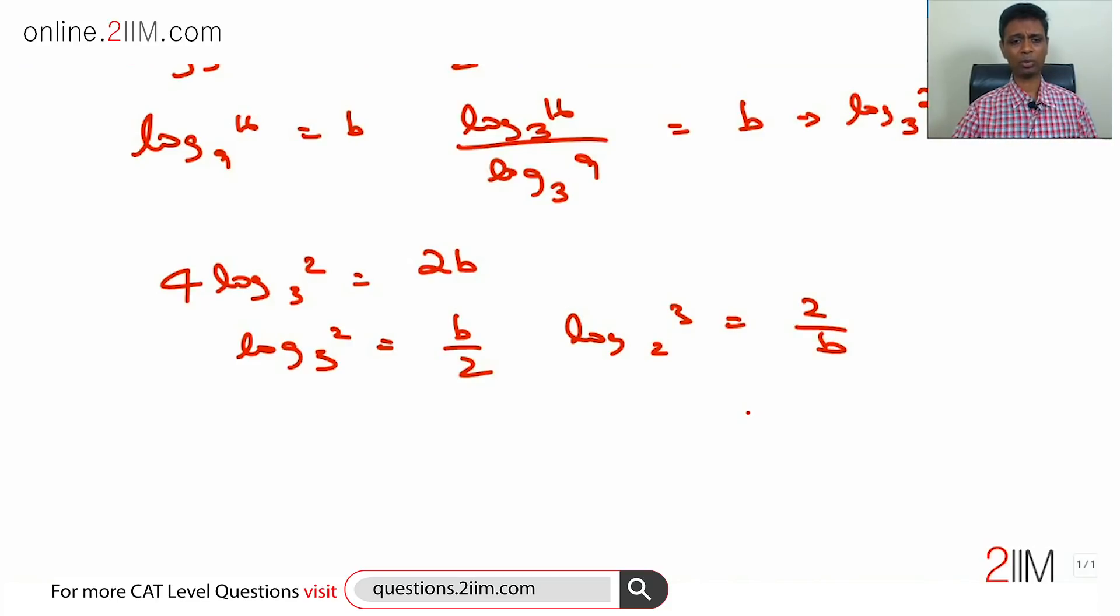Both of these we know, this is the reciprocal of that. That we have simplified. Now let's focus our attentions on log 108 to the base 8. This is log 4 to the base 8 plus log 27 to the base 8.